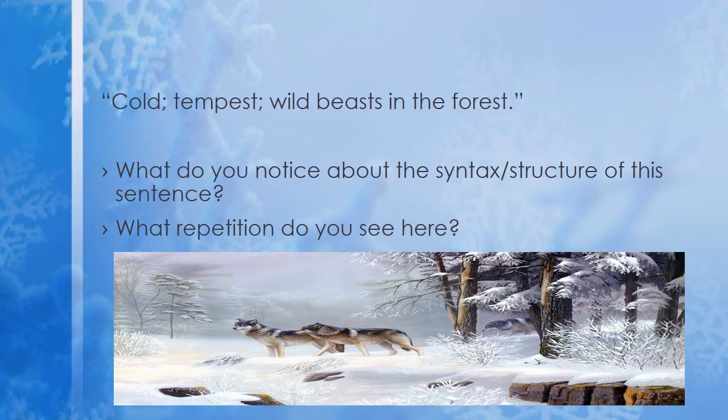'Cold tempest, wild beasts in the forest.' Note the repetition of 'cold' — it's emphasizing the cold as an important thing to know about this place. Also notice the syntax or structure of this sentence: it's actually not a proper grammatical sentence. It's just words, descriptions — cold, tempest, wild beasts in the forest — without saying 'there are.' It just gives you the names, throwing the words out there, suggesting their inescapable presence. There's a certain simplicity here, just telling us what there is, not a lot of flowery description — suiting the rather harsh context and harsh setting.